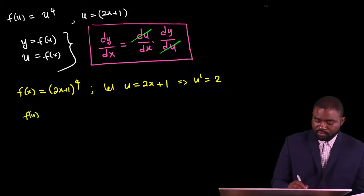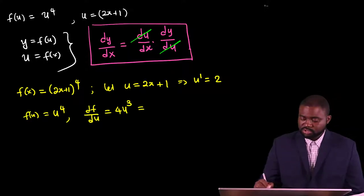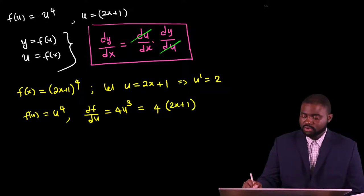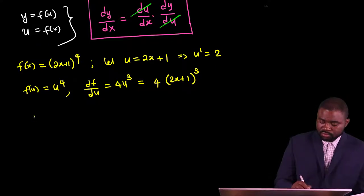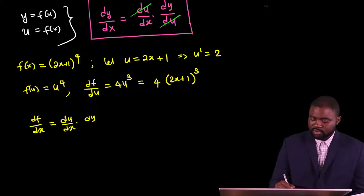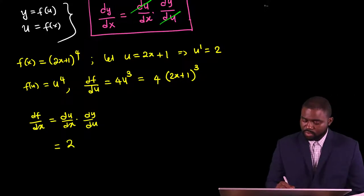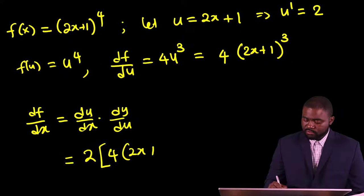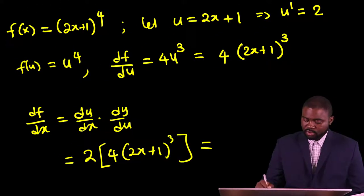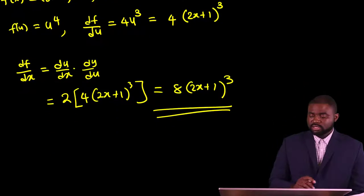Hence, f of u is equal to u raised to the power of 4. Therefore, df/du is 4u raised to the power of 3, which is 4(2x + 1) raised to the power of 3. By the chain rule, df/dx is equal to du/dx multiplied by df/du, which equals 2 multiplied by 4(2x + 1)³, giving us 8(2x + 1)³. This is an example.